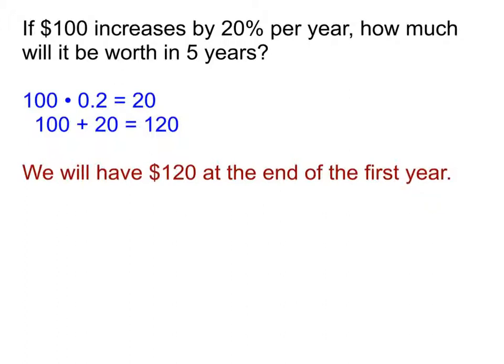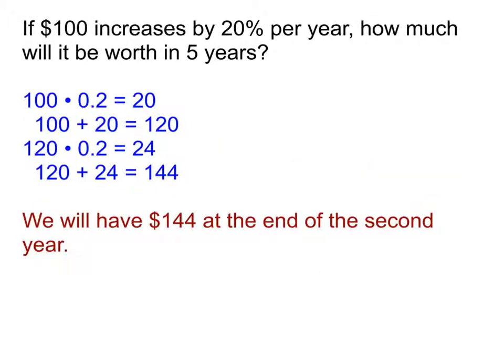At the end of the next year, am I going to have $140? No. Because it's going up by 20% a year. On the first year, it went up 20% of 100. But for the second year, it is going to go up by 20% of 120. What is 20% of 120? We take 120 and again multiply it by 0.2, and when you do that, we get 24. The first year, the amount of money grew by $20. But the second year, it grows by $24. So instead of having just $140, we now have $144.